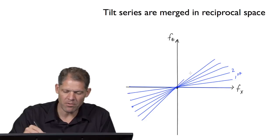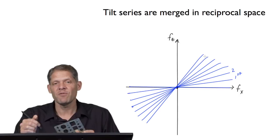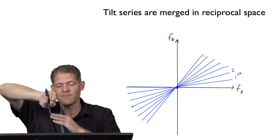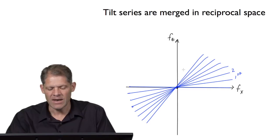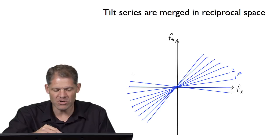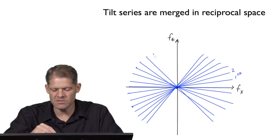In tomography, we typically can only get up to about 60–70 degrees tilt before the sample becomes too thick — at 90 degrees it would be infinitely thick. So there's a missing region of data we don't record. We also tilt in the opposite direction toward negative tilt angles, sampling amplitudes and phases in the negative direction, again limited to about negative 60 or 70 degrees.